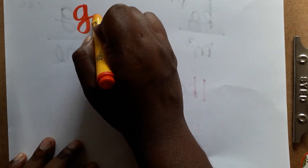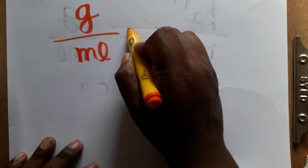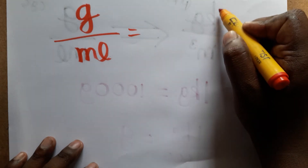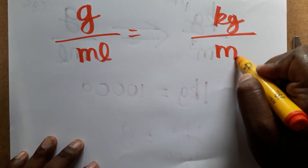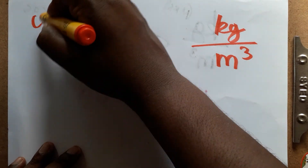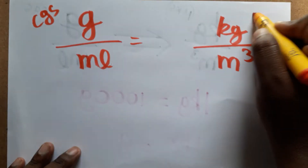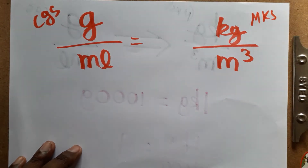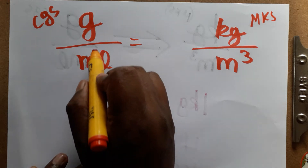Today we are going to learn gram per mL to kg per meter cube — that is, a density unit conversion from the CGS system to the MKS system. If you like my channel, please subscribe.